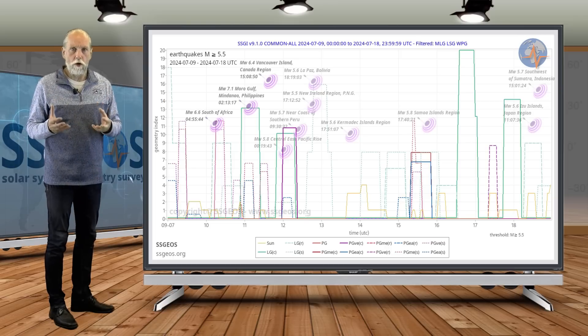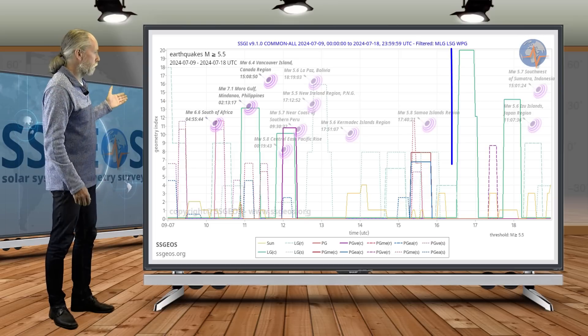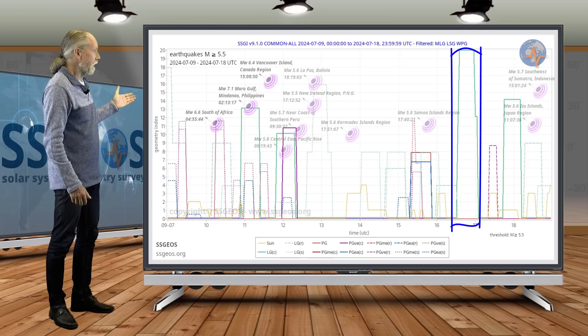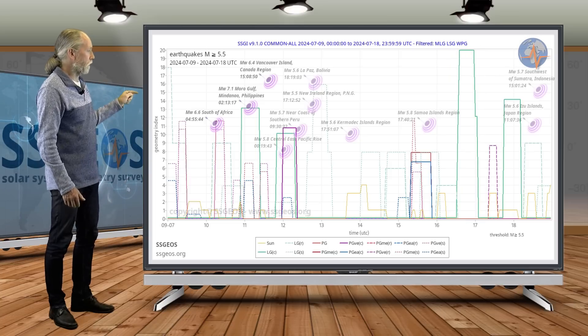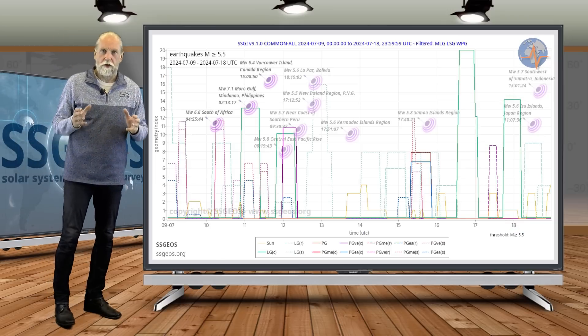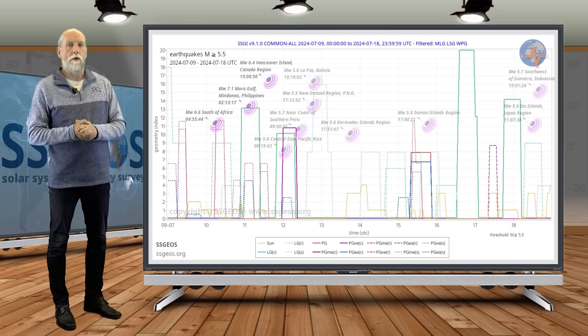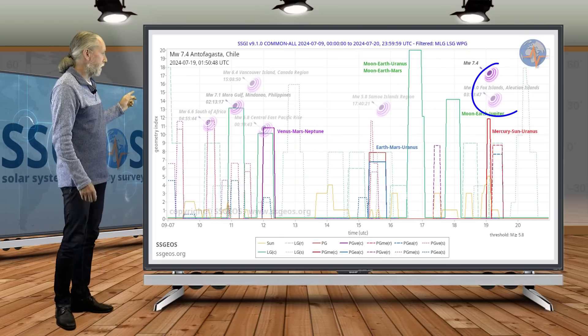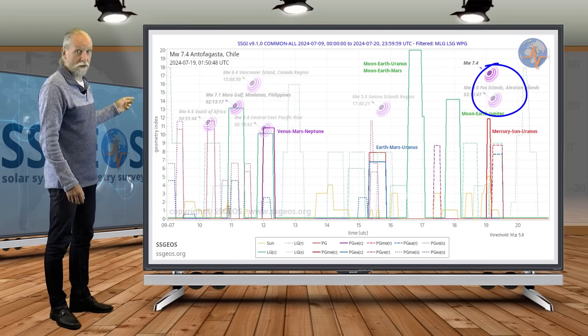And then we had high lunar peaks, that's lunar geometry with Uranus and Mars on the 16th, later on the 16th, and it was followed by a lunar conjunction with Jupiter later on the 17th. And following that lunar geometry, we had a major earthquake, 7.4, and that was in Chile, Antofagasta, Chile.